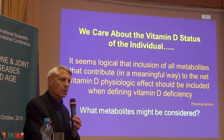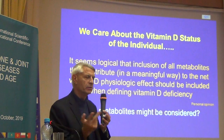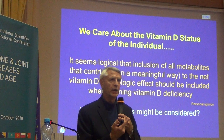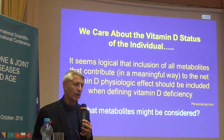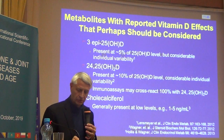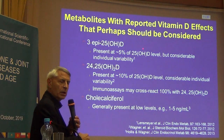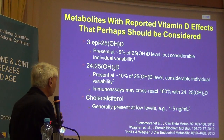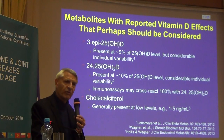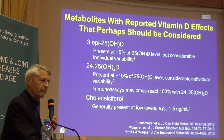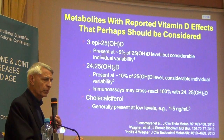Maybe we should include other metabolites, because we care about the vitamin D status of that one individual patient, and it seems logical that if these other metabolites contribute meaningfully to actual vitamin D physiologic effect, they should be included — not just single 25-hydroxy-D. Candidates include the 3-epimer of 25, which not all assays measure; 24,25-dihydroxy-D, the first step on the degradative pathway, present at about one-tenth of total 25-D; and cholecalciferol itself.